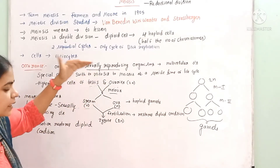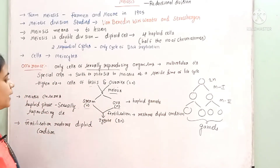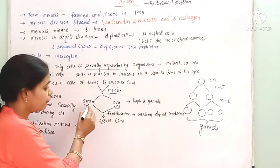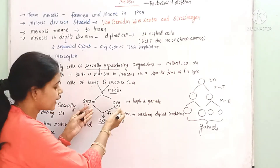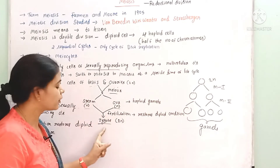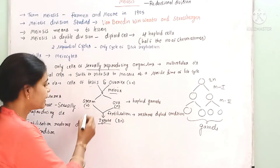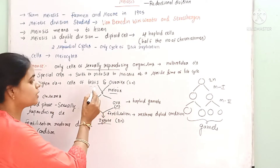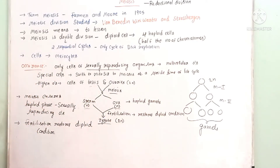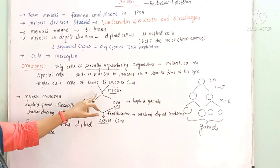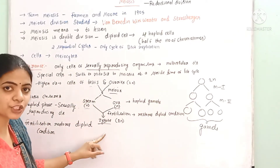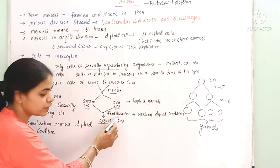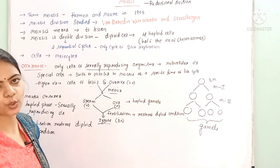The life cycle alternates between diploid and haploid conditions. When sperm and ovum fuse during fertilization, they form a zygote (n + n = 2n), restoring the diploid condition. So meiosis creates the haploid condition in the life cycle of sexually reproducing organisms, while fertilization restores the diploid condition.